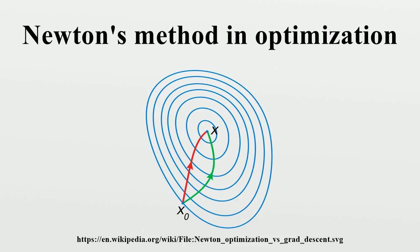Where applicable, Newton's method converges much faster towards a local maximum or minimum than gradient descent. In fact, every local minimum has a neighborhood N such that, if we start with x_0 in N, Newton's method with step size gamma equals 1 converges quadratically.